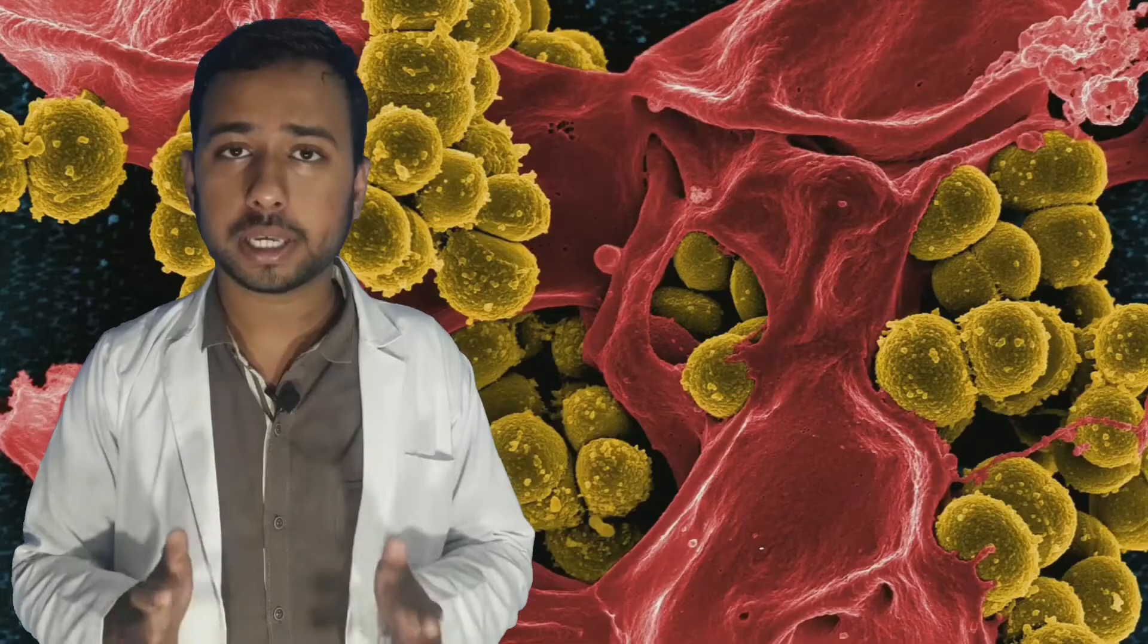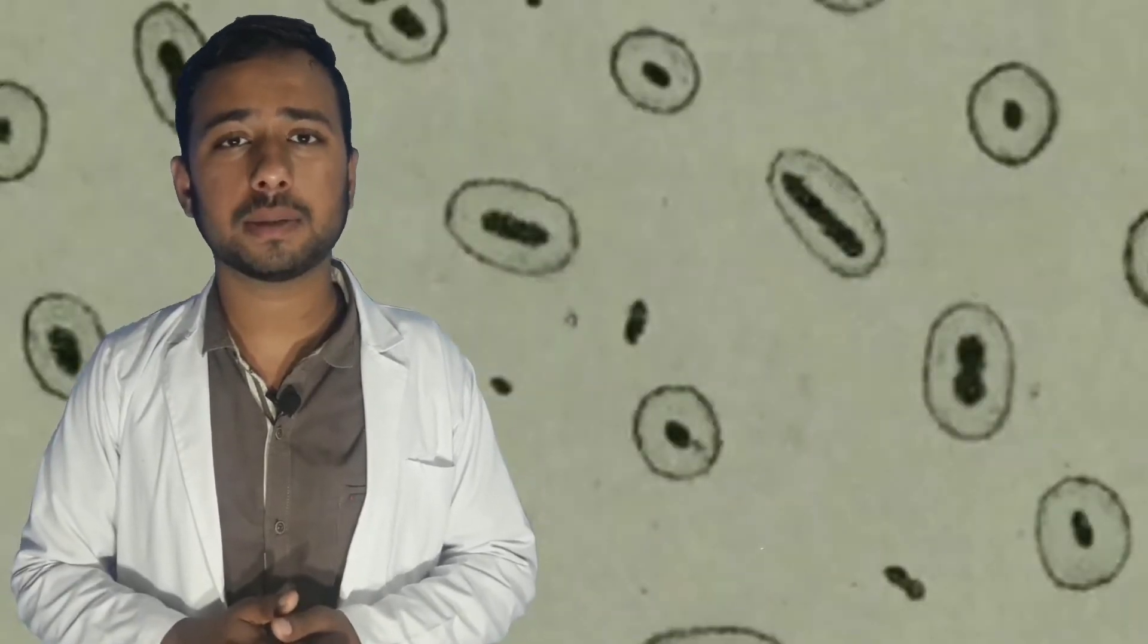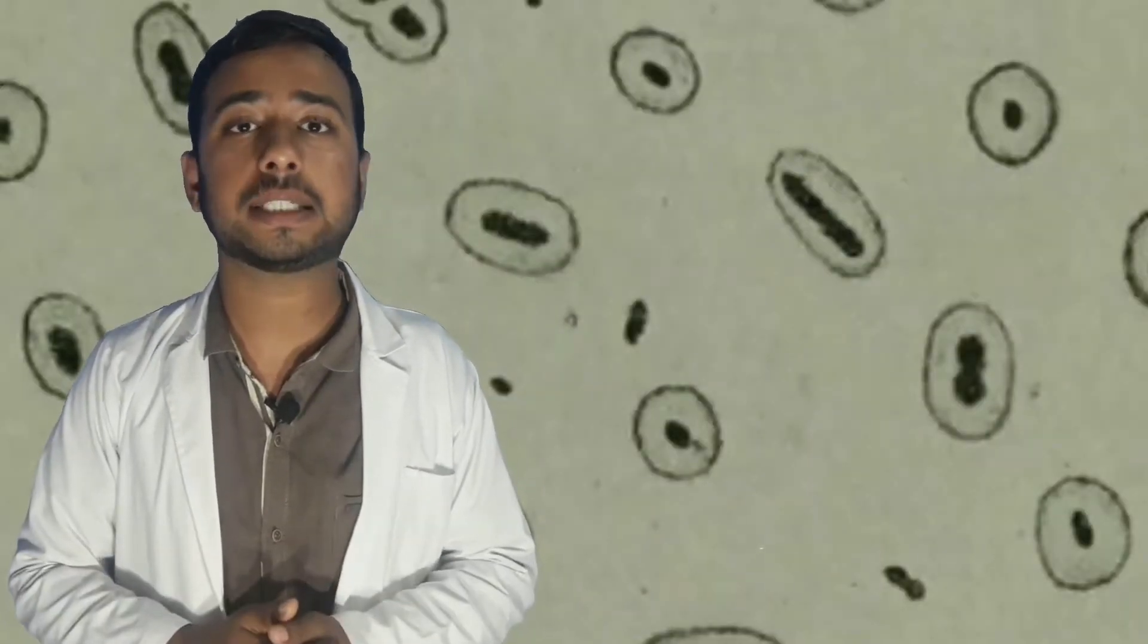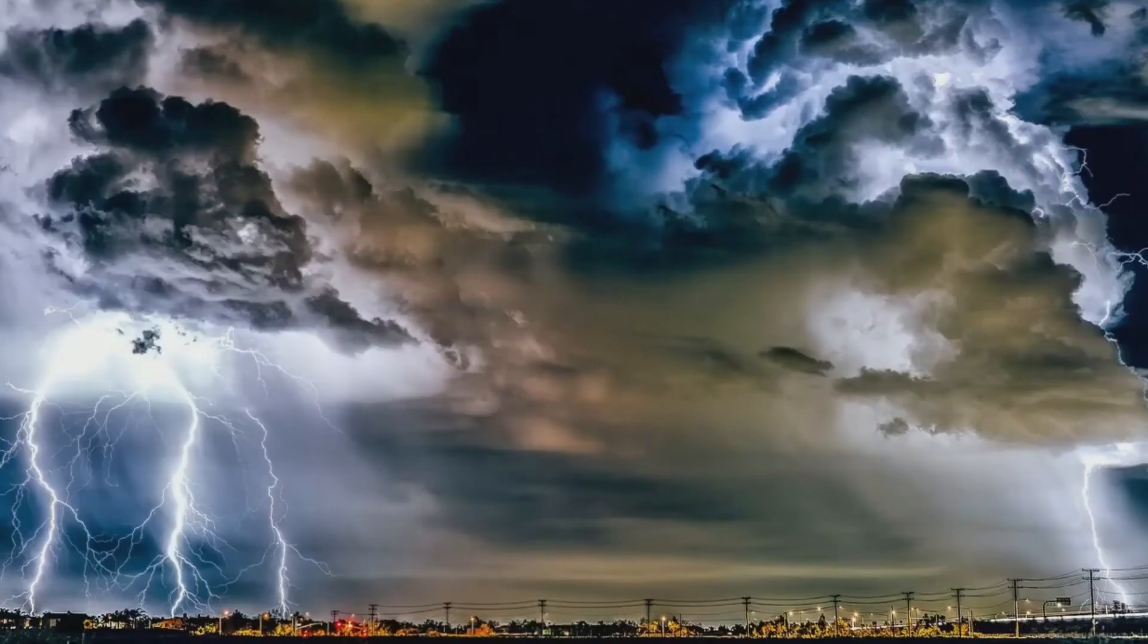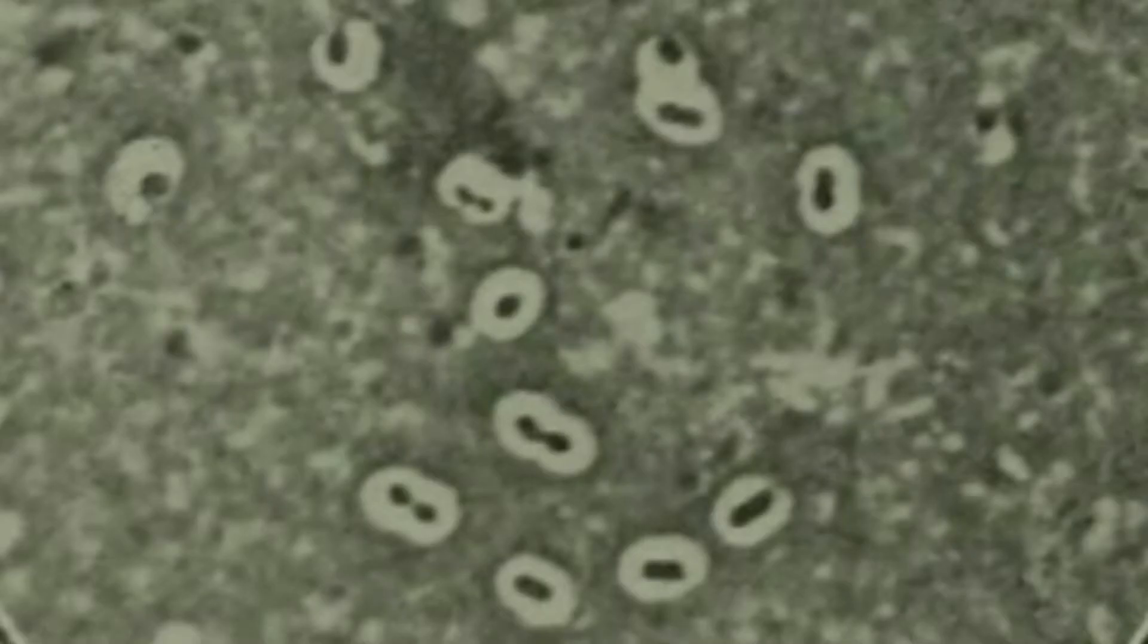Capsule is the outermost covering of the bacteria which protects it from its extreme surroundings. For example, our house protects us from extreme surroundings such as heat, temperature, or rain. Similarly, in the case of bacteria, the capsule also protects it from extreme surroundings. When we visualize the bacteria under microscope, the capsules look like that.